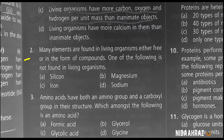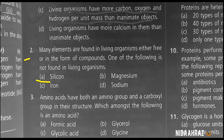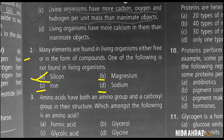Many elements are found in living organisms either free or in the form of a compound. One of the following is not found in living organisms: silicon, magnesium, iron, or sodium. The correct choice is option A — silicon.